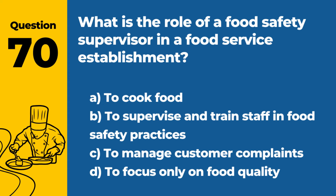Question 70. What is the role of a food safety supervisor in a food service establishment? a. To cook food. b. To supervise and train staff in food safety practices. c. To manage customer complaints. d. To focus only on food quality. Answer b. To supervise and train staff in food safety practices. The role of a food safety supervisor involves overseeing and training staff in proper food safety practices, ensuring compliance with regulations, and maintaining a safe dining environment.